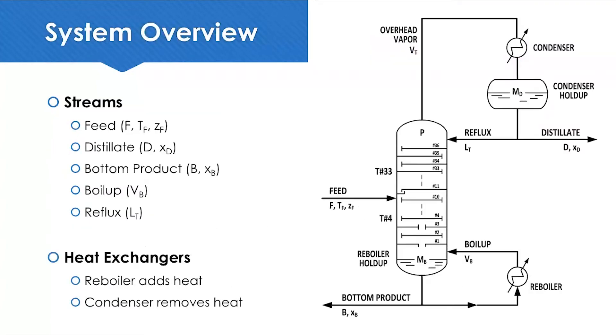Here is a quick system overview. The important streams on this system are the feed entering the column, the distillate and the bottom product leaving the column, the boil-up vapor produced at the reboiler that returns to the tower, the cooled reflux that enters the top of the tower, and we also have two energy streams. There's a reboiler that adds heat and a condenser that removes heat from the system.